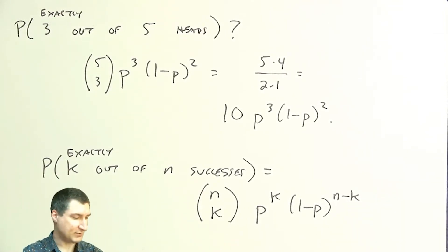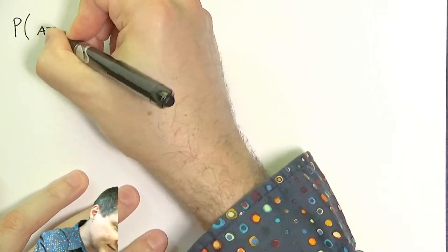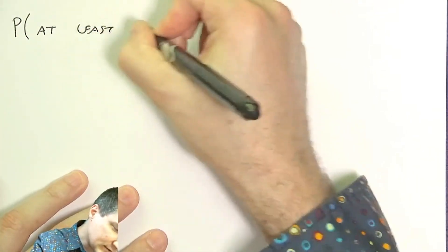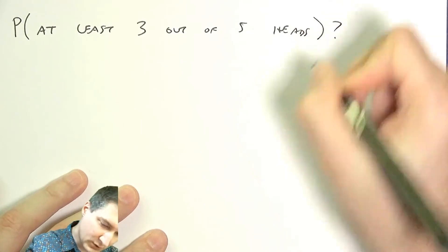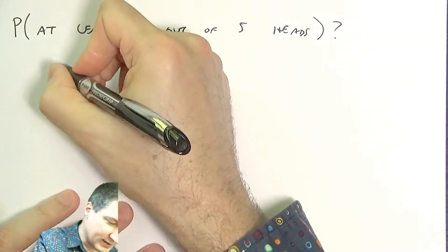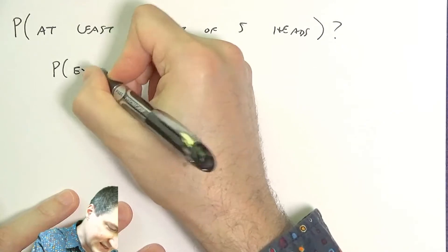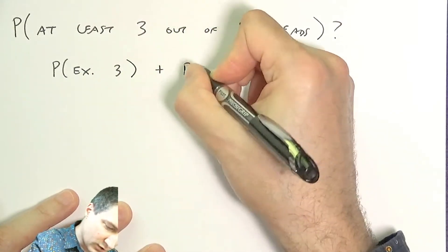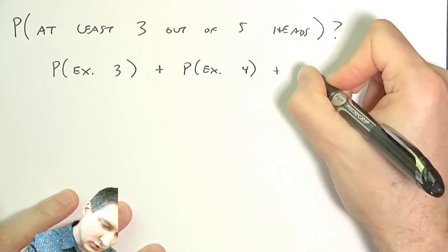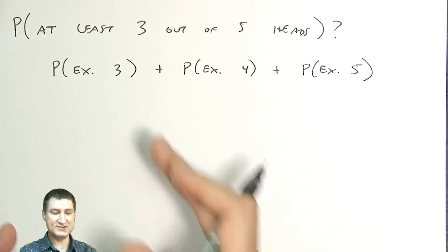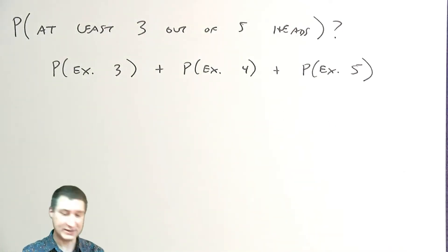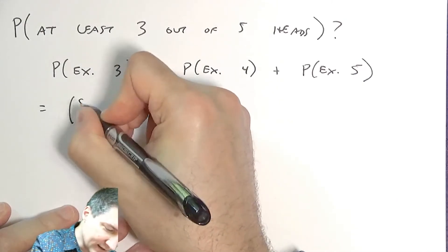I keep on saying exactly. What if I change this slightly to say, what's the probability that I have at least three out of five heads? I have to take this apart to say, well, I could get exactly three, or I could get exactly four, or I could get exactly five. Since these events are all disjoint, I can add up the probabilities.